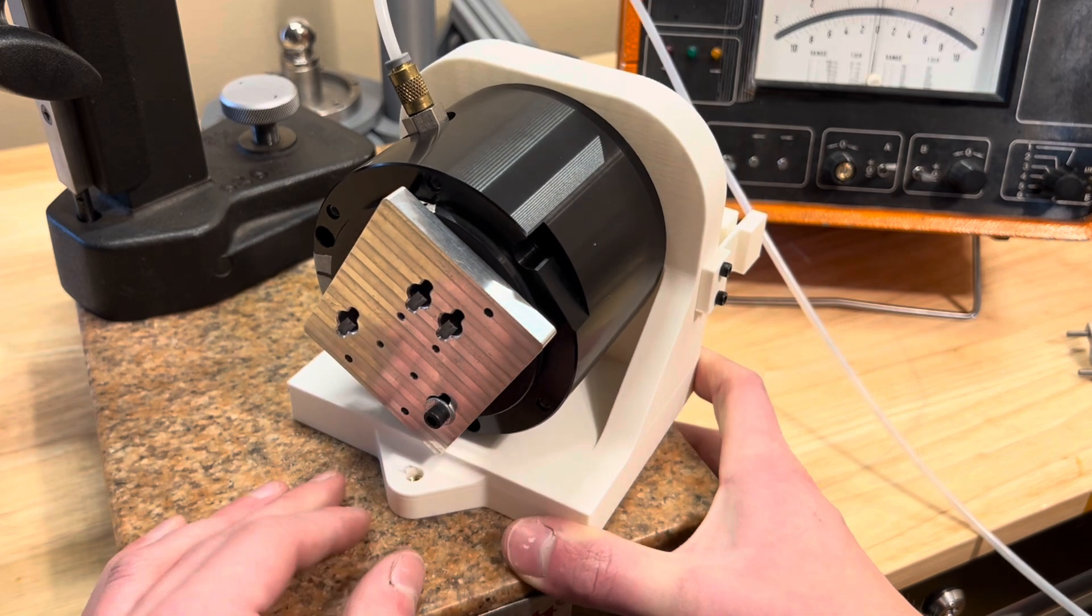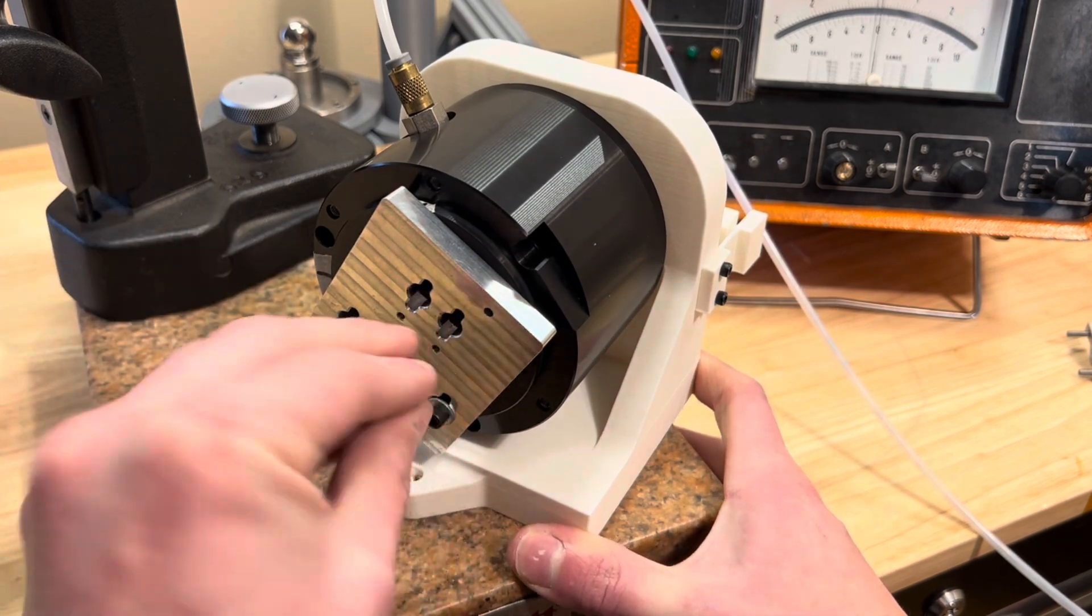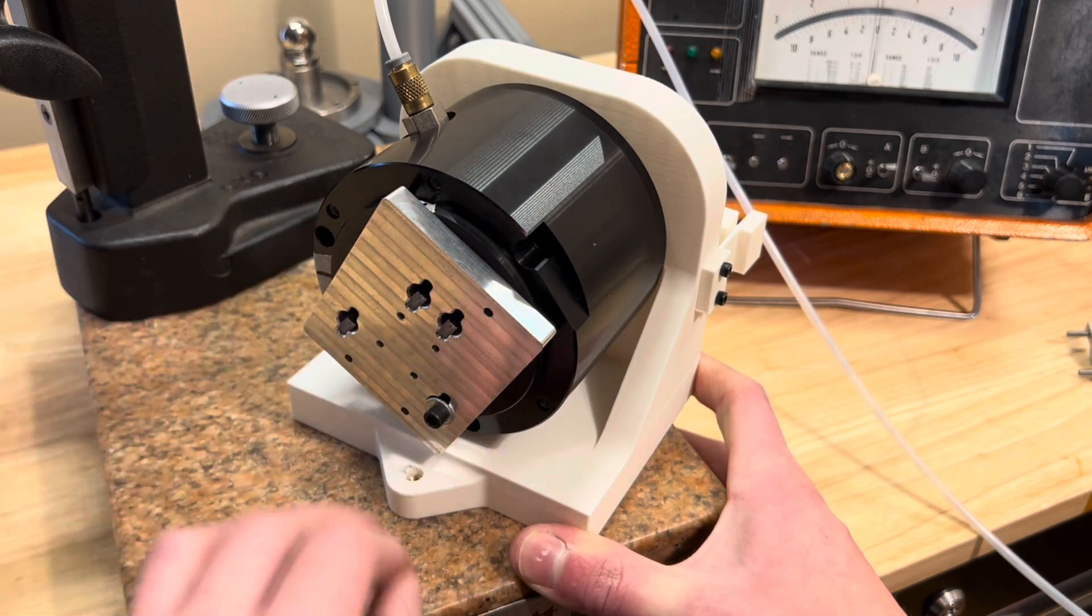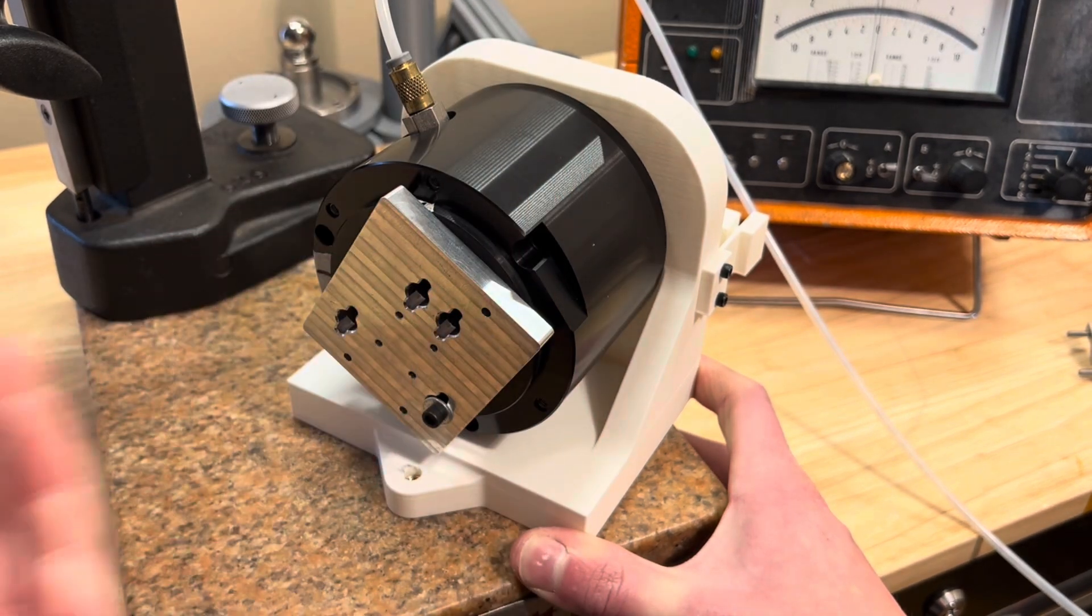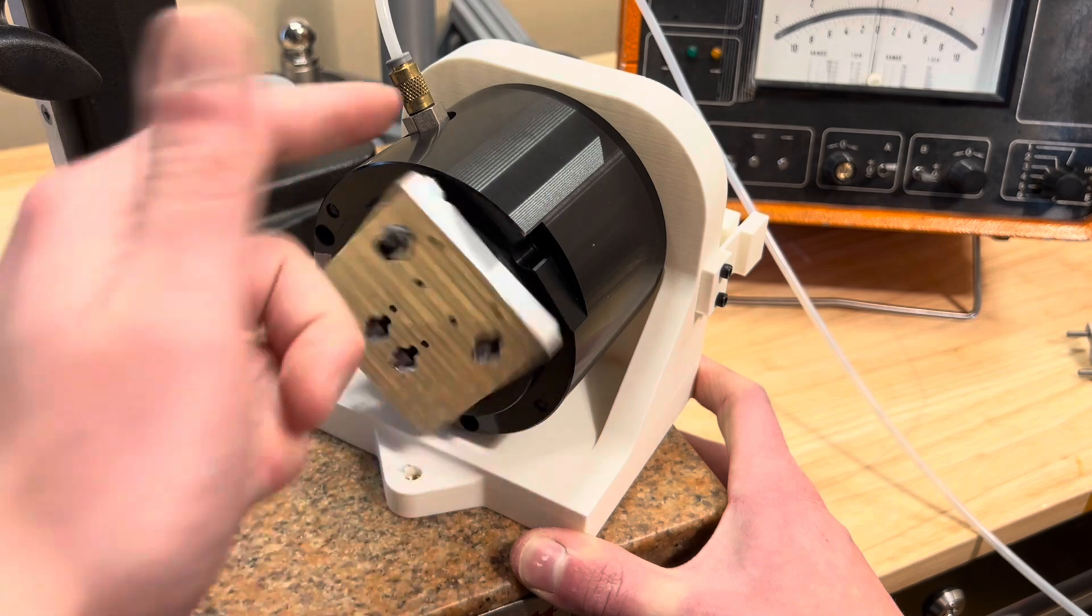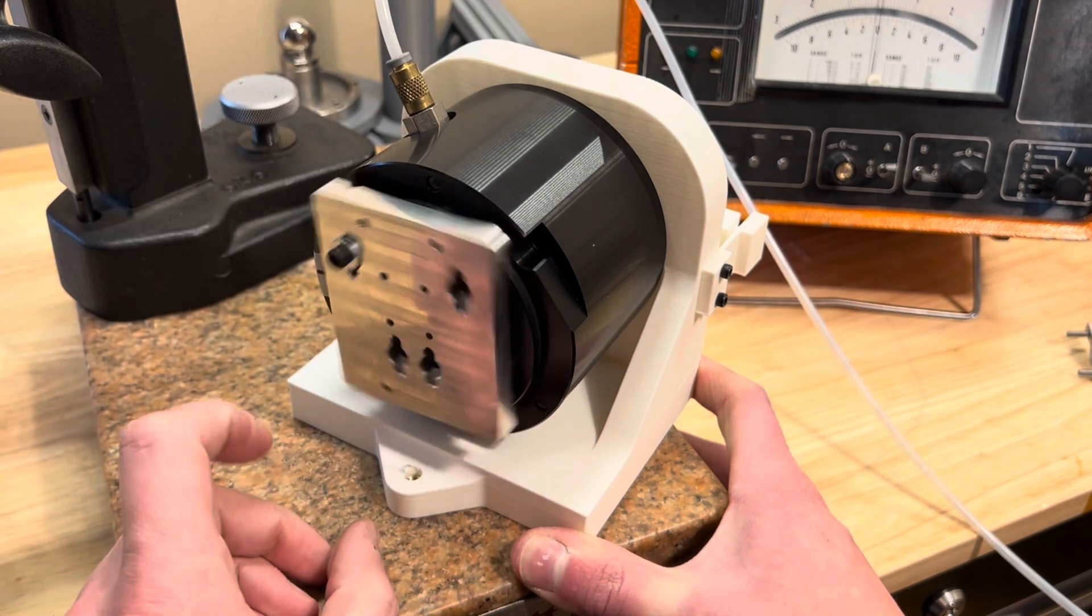First things first, we want a way to index and rotate the part, to pivot it between the different indexes we want to go between. And the basis for that is an air bearing spindle. I've got this 3R Biconic here.